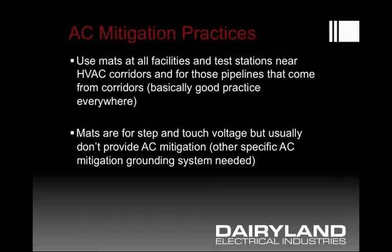AC mitigation practices are to use matting at facilities and test stations near where there could be induced effects or fault effects — so anywhere there would be a high voltage AC corridor. It is also good practice to use mats at any location where there could be overvoltage conditions. They are usually used for step and touch voltage, but they aren't going to be low resistance AC grounds for mitigation. That would come from other grounding systems that one would install specifically for that task.